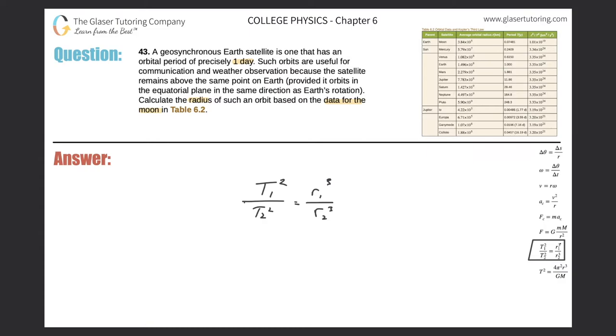Anyway, so I can call 1 and 2 really whatever I want. Let's call 1 the satellite. So the period of the satellite squared, then divided by the period of the Moon squared should be equal to the radius of orbit of that satellite cubed, divided by the radius of the orbit of the Moon cubed. So what are we looking for here?